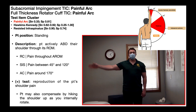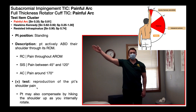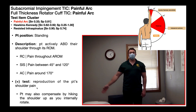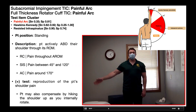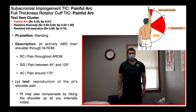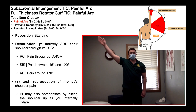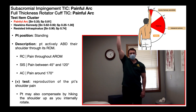What constitutes a positive painful arc test? It would be reproduction of the patient's shoulder pain occurring over a particular arc of motion — a range of angles. The study defined those angles between 60 degrees and 120 degrees of abduction. Clinically, you may see it as low as 45 degrees, so you'll often see the painful arc described as between 45 and 120 degrees. When you're in the clinic, it doesn't really matter if it's exactly 60, 50, 45, or 40 degrees — there's just an arc of pain as they go through shoulder abduction, and that would be considered a positive test.